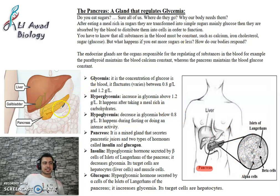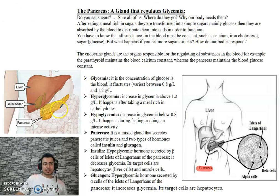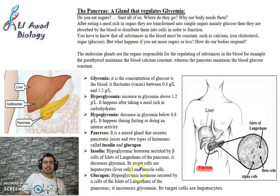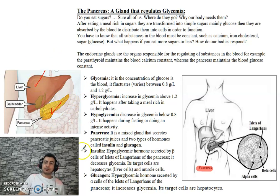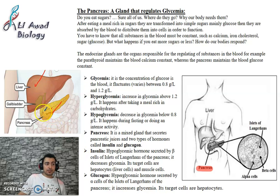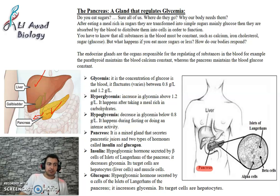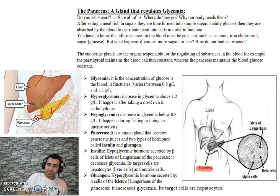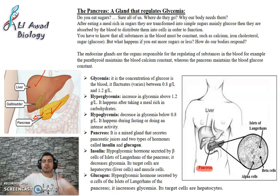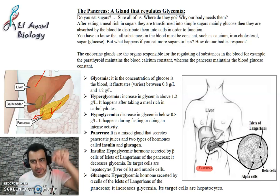The pancreas is an organ found to the left side of the stomach, under the liver. The pancreas opens into the small intestine and secretes pancreatic juice. But importantly, it also secretes hormones, and these hormones are responsible for the regulation of glycemia.